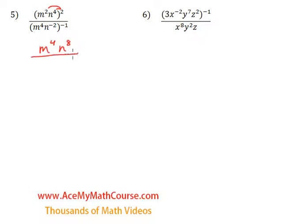Same thing down below. We have m to the power of 4 — we multiply that by negative 1, so 4 times negative 1 is negative 4. And n to the power of negative 2, raised to the power of negative 1 — we just multiply them: negative 2 times negative 1 is positive 2. Negative times negative makes a positive.